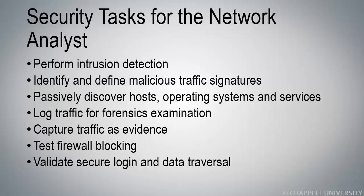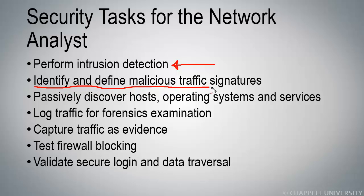We can use analysis to perform intrusion detection. We can actually set up Wireshark to filter on malicious traffic, and when any of the packets match the filter, we'll see them on the screen. In addition, we use Wireshark and network analysis to identify and define malicious traffic signatures. For example, if you were afraid you had Low Orbit Ion Cannon on your network, you would be looking for the word 'probando' as a signature. Many of the attack tools used today have a specific signature that we can recognize, and those are the signatures used by intrusion detection systems.